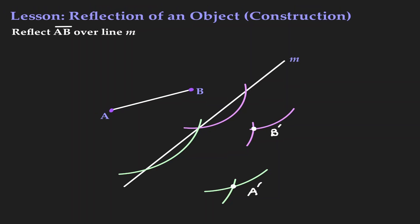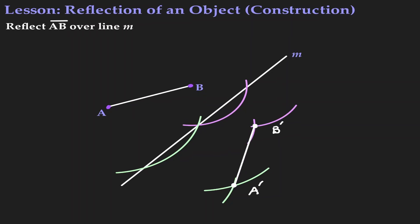And we are done. Because if we connect A' to B', this will be the image of the reflection when AB is reflected over the line M. Here we have the pre-image, and after the reflection, here we have our image.